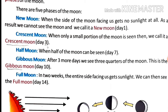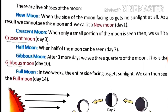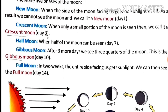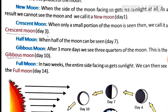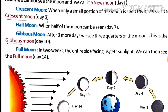Next is the crescent moon on day four: when only a small portion of the Moon is seen, we call it a crescent moon. Next is the half moon on day seven: when half of the Moon can be seen. Next is the gibbous moon on day ten: after three more days we see three quarters of the Moon — this is the gibbous moon.